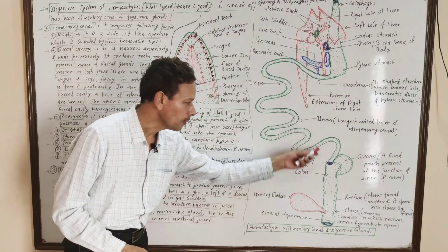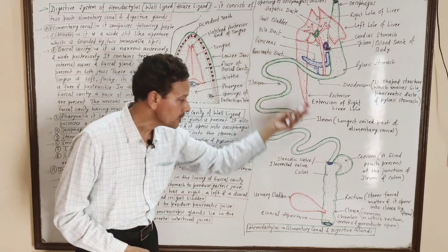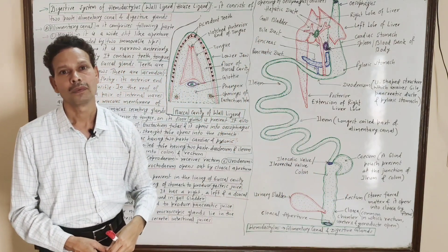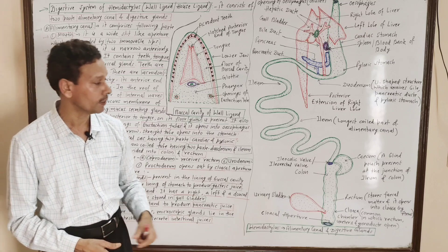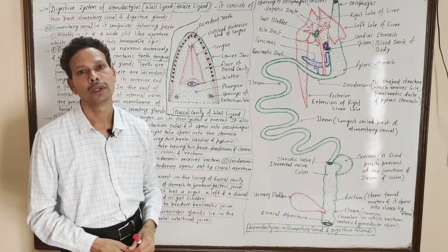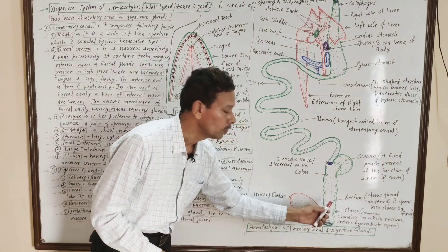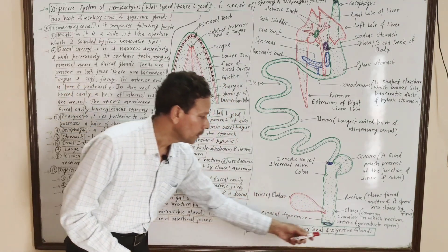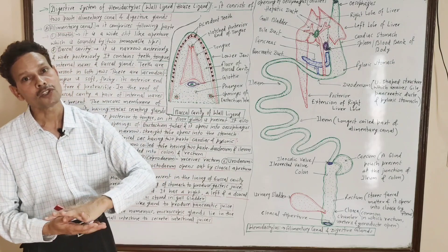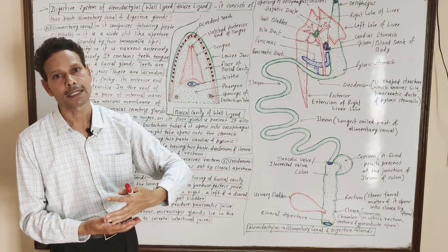The terminal, last part of the large intestine in the alimentary canal is the rectum, which stores fecal matter. This rectum opens into a common chamber called the cloaca through the anus. The cloaca is a common chamber divided into three parts.